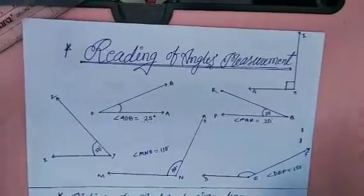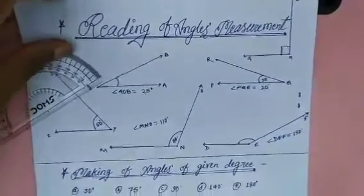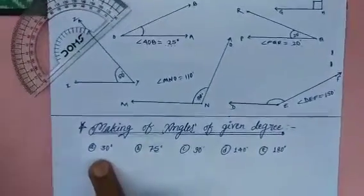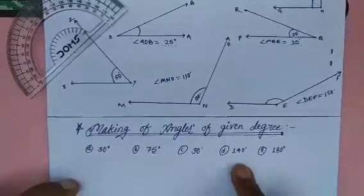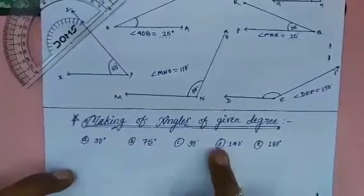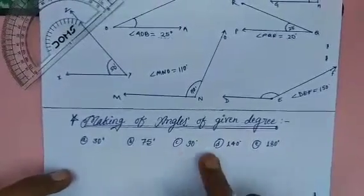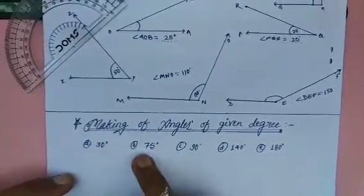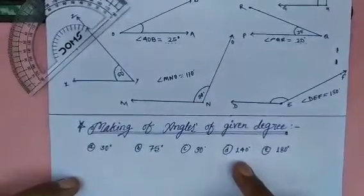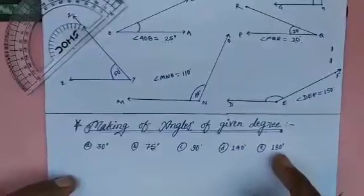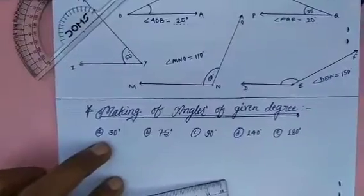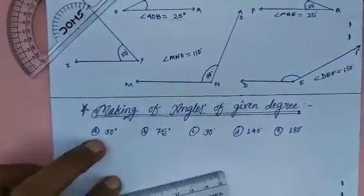Topic one is now covered. We move to the next topic: making angles of given degrees. The angles to construct are 30 degrees, 75 degrees, 90 degrees, 140 degrees, and 180 degrees. The acute angles are 30 and 75 degrees, 90 degrees is a right angle, 140 degrees is an obtuse angle, and 180 degrees is a straight angle.